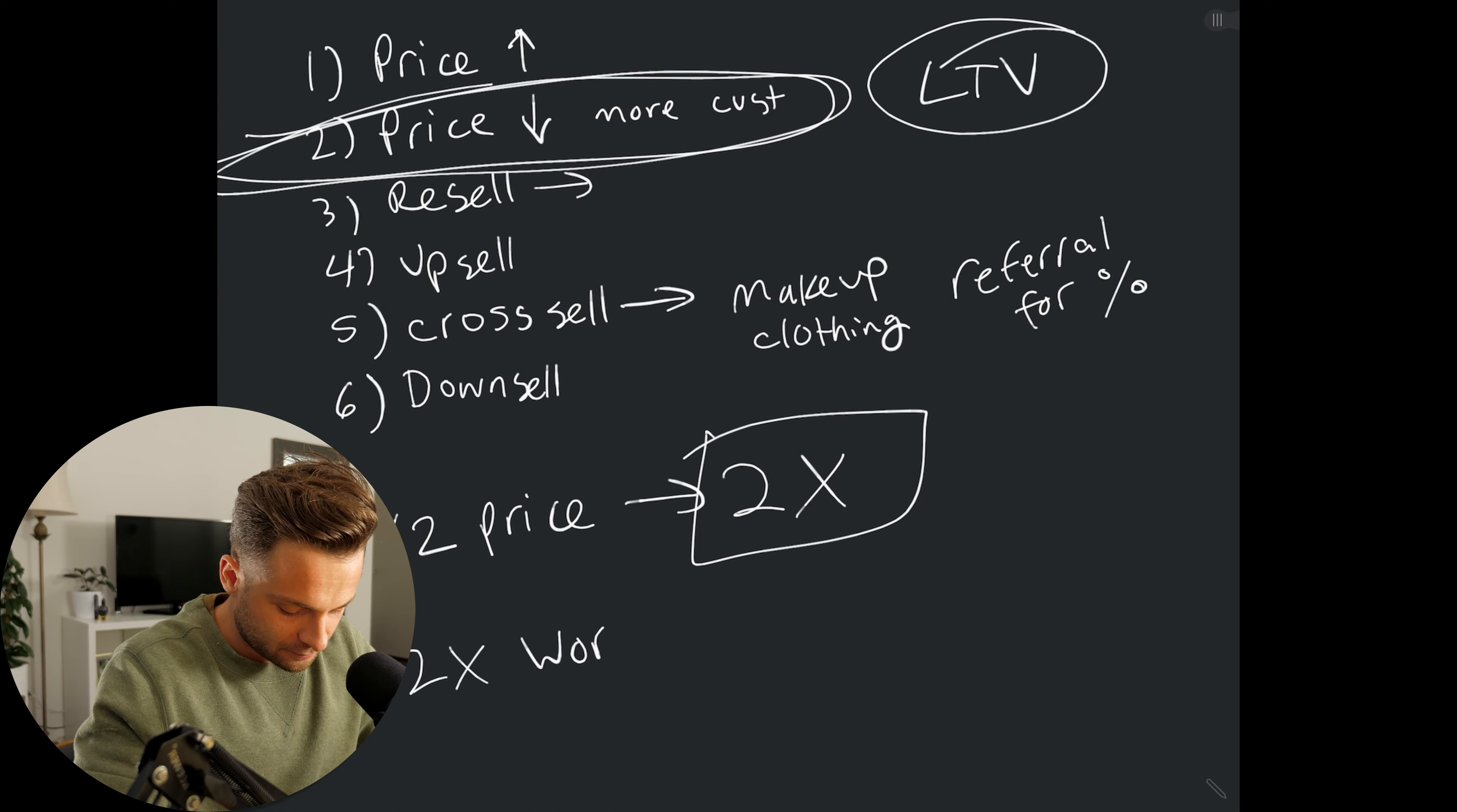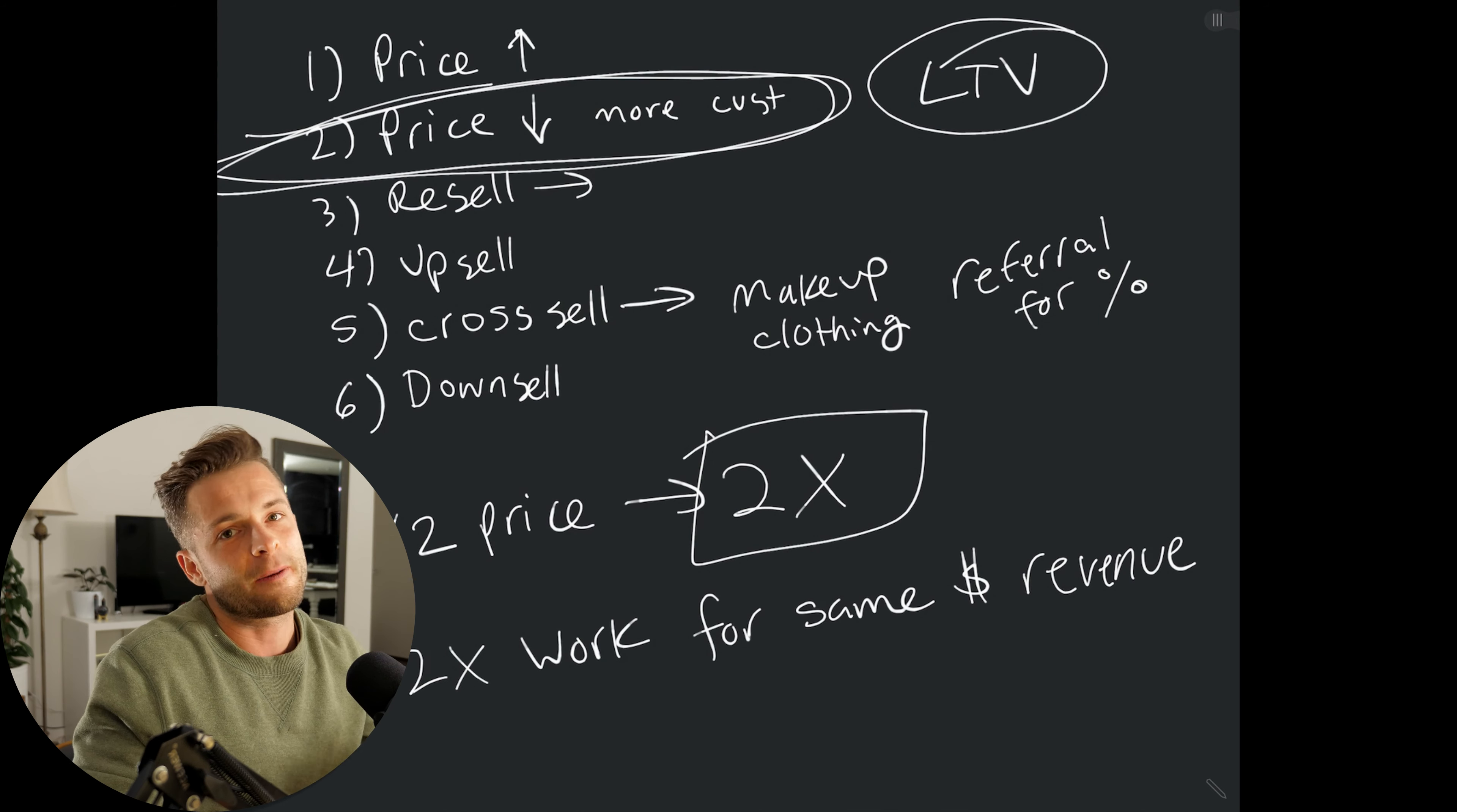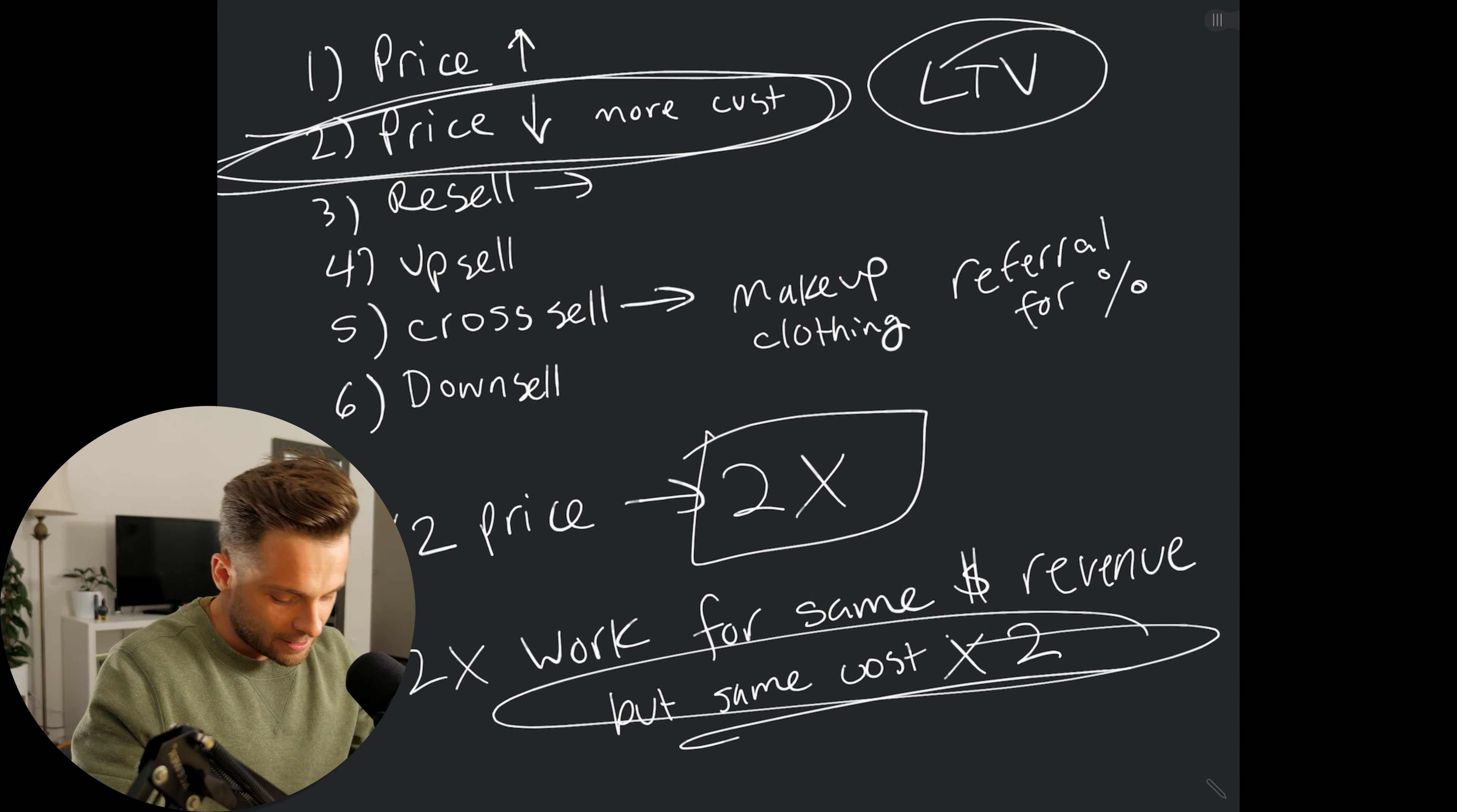You're going to do twice the work for the same amount of money, but that's just the same amount of revenue. Now, this is really important. Your costs aren't going to change much when you charge less. So, your costs are now doubled as well. So, effectively, you're going to be half as profitable. You're going to lose that cost because now instead of doing five weddings and spending 500 bucks a wedding, you're doing 10 weddings and spending 500 bucks a wedding, and that's five grand instead of 2,500 bucks. Okay.